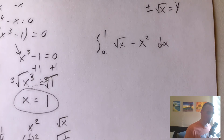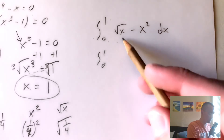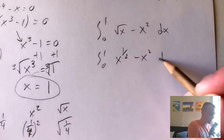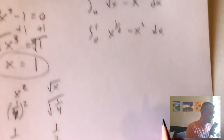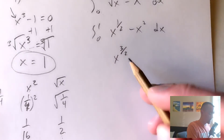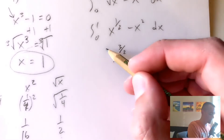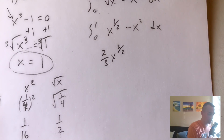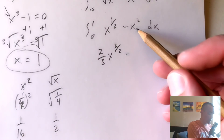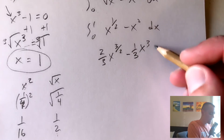So our integral from 0 to 1 is the top function minus the bottom function: square root of x minus x squared. I recommend converting the square root into a power — x to the one-half — to make integration easier. Applying the power rule: raise the power by one to get x to the three-halves, then divide by three-halves, which is the same as multiplying by two-thirds. For x squared, raise the power to get x cubed and multiply by one-third.